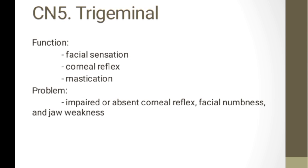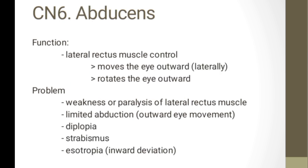Cranial nerve 6 is the abducens — the favorite of students during quizzes because they use their abducens to look sideways at answers. Its function is lateral rectus muscle control: it moves the eye outward or laterally and rotates the eye outward. Problems include weakness or paralysis of the lateral rectus muscle, limited abduction, diplopia or double vision, estrabismus, and esotropia or inward deviation.